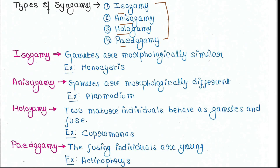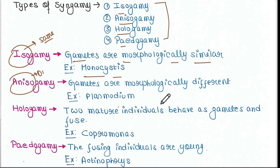In isogamy, the gametes are morphologically similar — iso means same or similar. This is found in monocystis. In anisogamy, aniso means different, so gametes are morphologically different. Example: plasmodium.